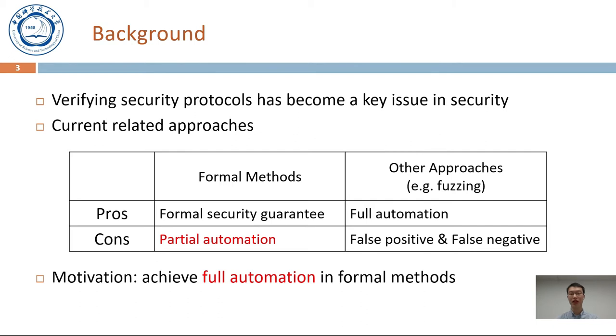It may require expert guidance when verifying protocols with global states or unbounded sessions. In contrast, other approaches, such as fuzzing, achieve full automation, but there are false positives and false negatives in experiments. In this work, our motivation is to achieve full automation in formal methods.